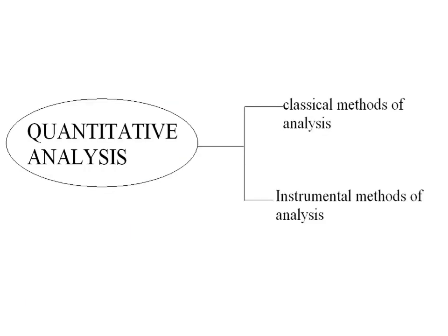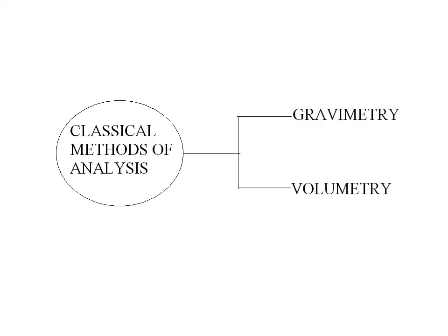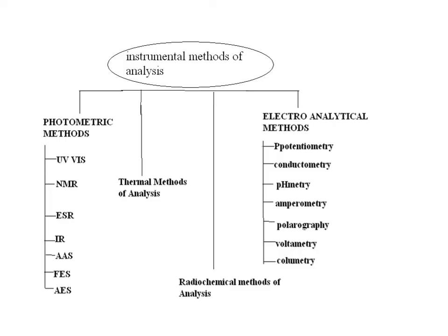Quantitative analysis falls into two categories: classical methods of analysis and instrumental methods of analysis. Classical methods fall into two categories: gravimetry and volumetry. Instrumental methods of analysis fall into four categories: photometric methods, thermal methods, radiochemical methods, and electroanalytical methods. Photometric methods involve UV-Visible, NMR, ESR, IR, AAS, FES, etc. Electrochemical methods involve potentiometry, conductometry, pH-metry, etc.